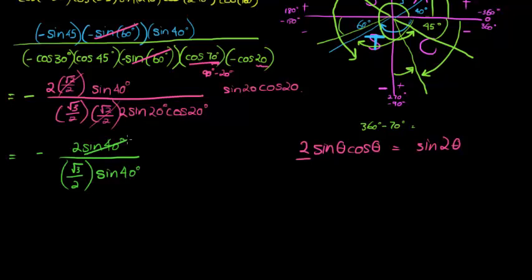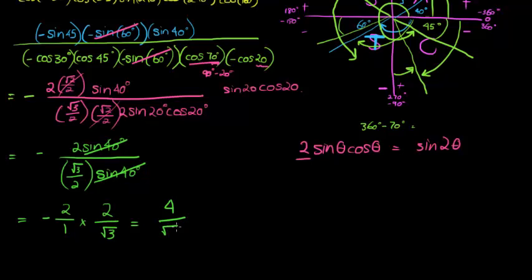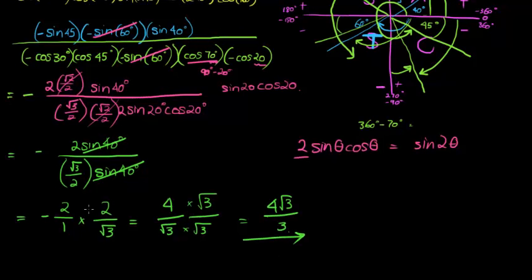The sine of 40 cancels, and now in the numerator we have negative 2 over 1, and we tip and multiply with the denominator: 2 over √3, giving us 4 divided by √3. Let's rationalize the denominator by multiplying by √3/√3, and that gives us 4√3/3. And that's it — however, I shouldn't forget my negative sign. So the final answer is negative 4√3/3.